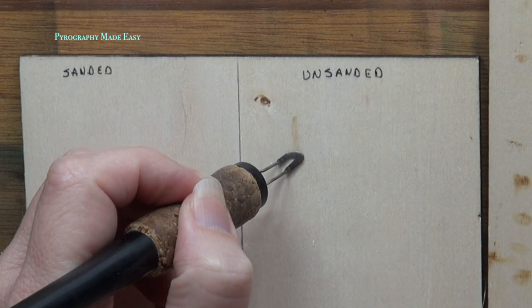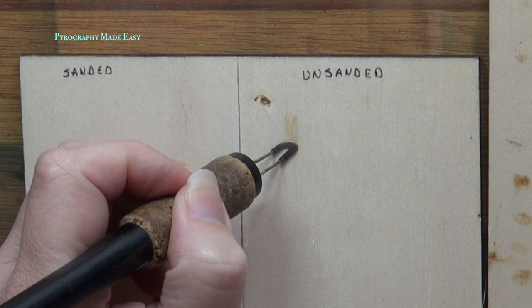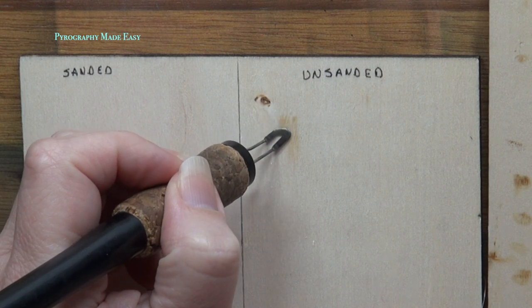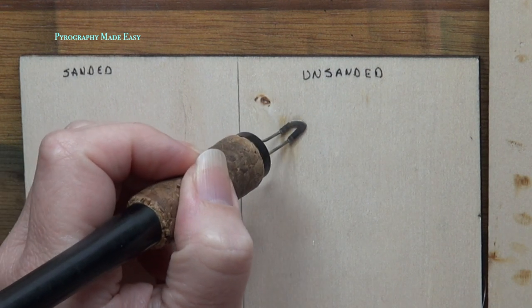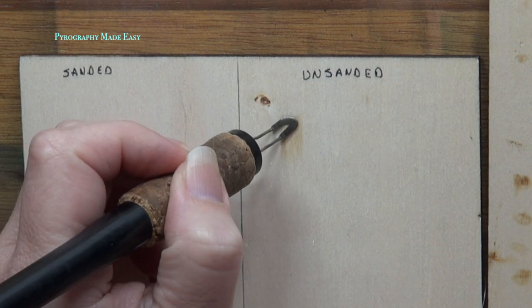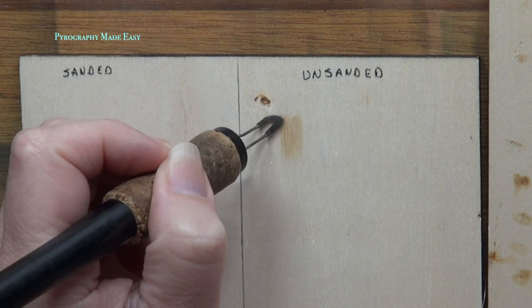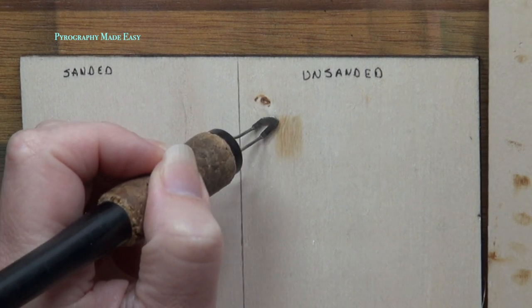As I burn on the unsanded side of the board it feels rough. I'm having a difficult time keeping the burn stroke smooth. Most of that is because the pen tip is encountering a lot of resistance.